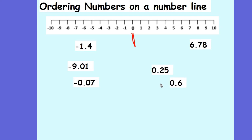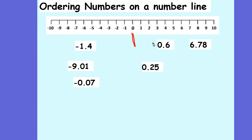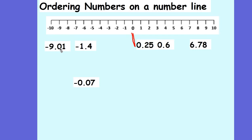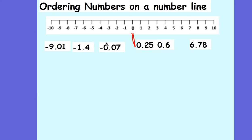If we then compare our next terms: 0.25 has got a 2 in the tenths column, 0.6 has got a 6 in the tenths column, so 0.6 is going to be slightly bigger and 0.25 is slightly smaller. If we look at our negatives, we need to compare them in the opposite direction. Negative 9.01 has got a 9 in the units column so that's going to be the most negative. Negative 1.4 has got a 1 in the units column so that's going to be slightly less negative. And negative 0.07 has got a 0 in the units column so that's going to be the least negative.